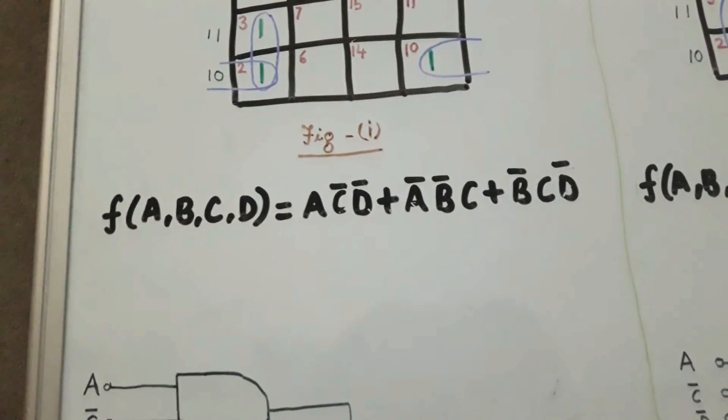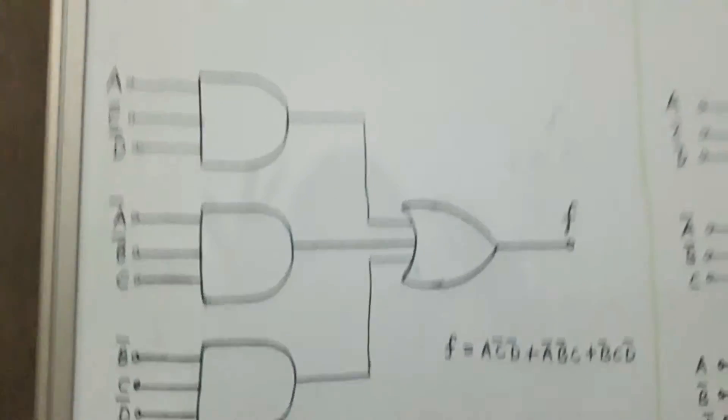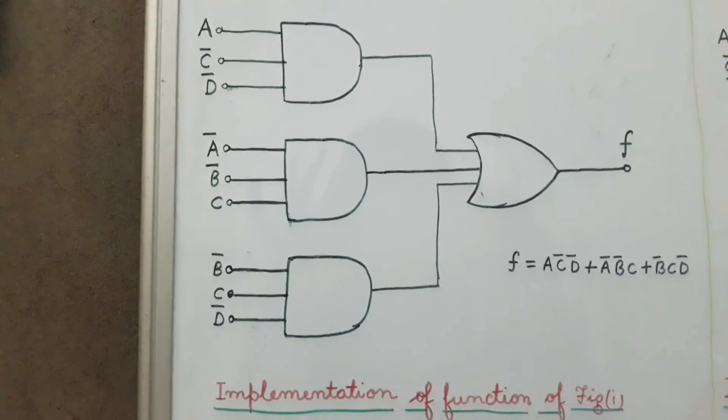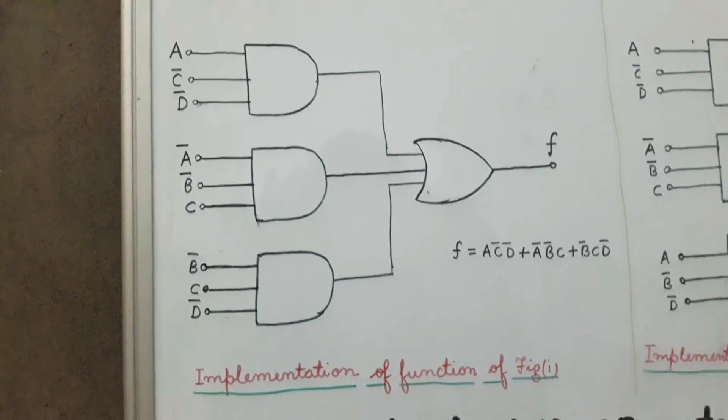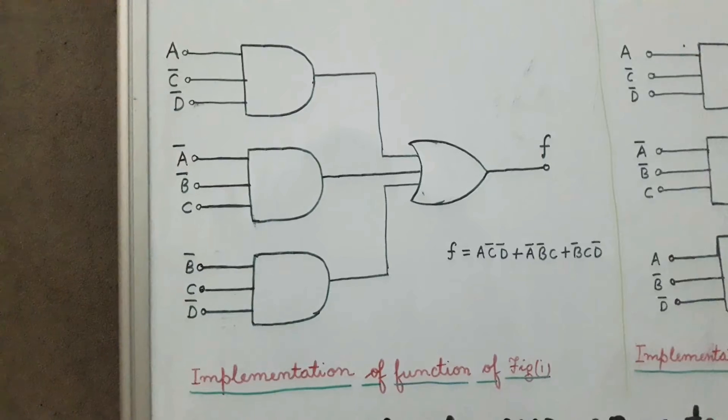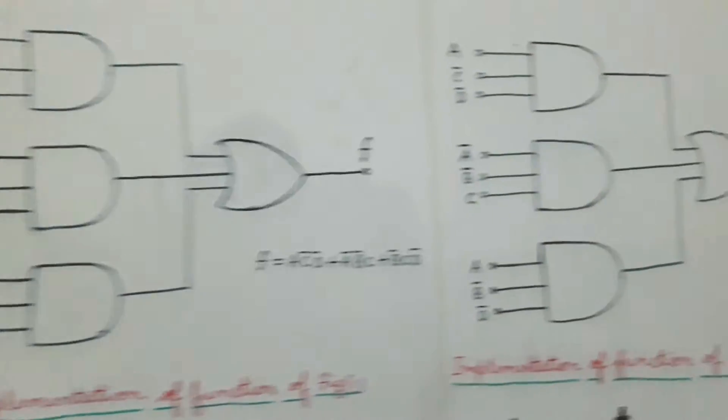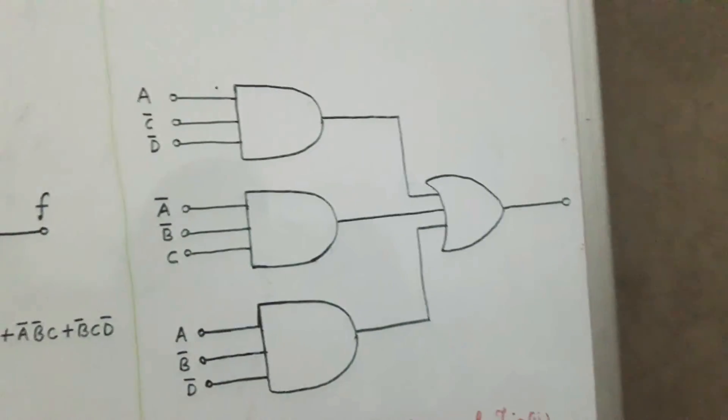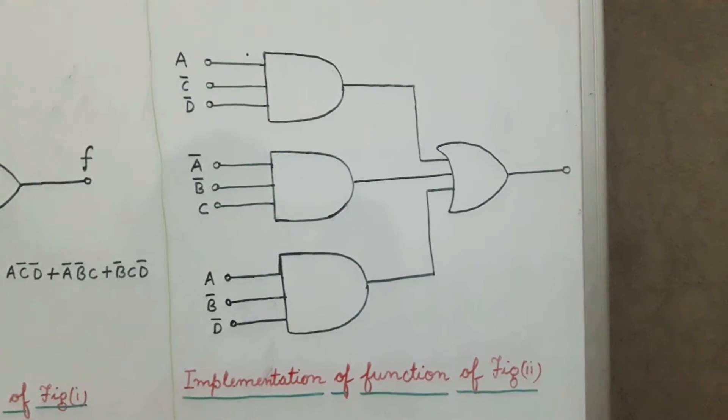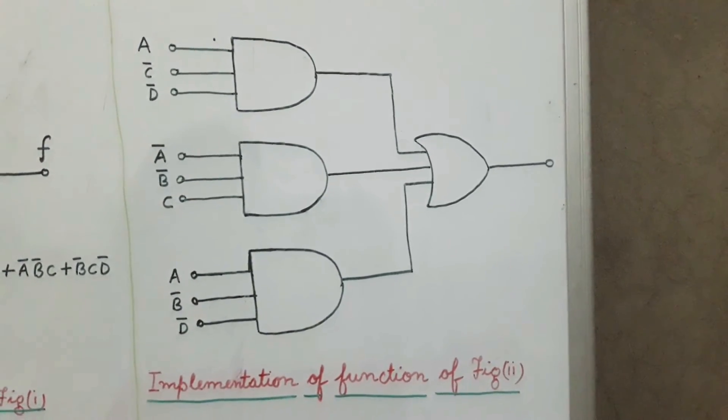Now we can implement this function using gates. The implementation of the function in figure 1 will be as shown in this figure. To implement this function we will need three AND gates and one OR gate. Similarly, we can implement this function using figure 2 as shown here. This will also be implemented using three AND gates and one OR gate.